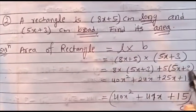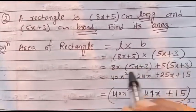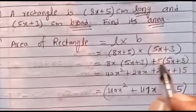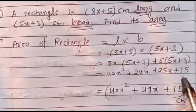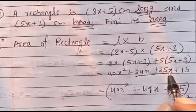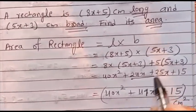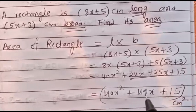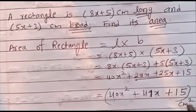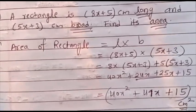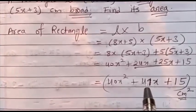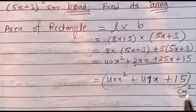Multiply: 8x into 5x is 40x². 8x into 3 is 24x. 5 into 5x is 25x. 5 into 3 is 15. Write 40x², then collect like terms 24x plus 25x equals 49x, plus 15. So the area of the rectangle is 40x² plus 49x plus 15 cm².